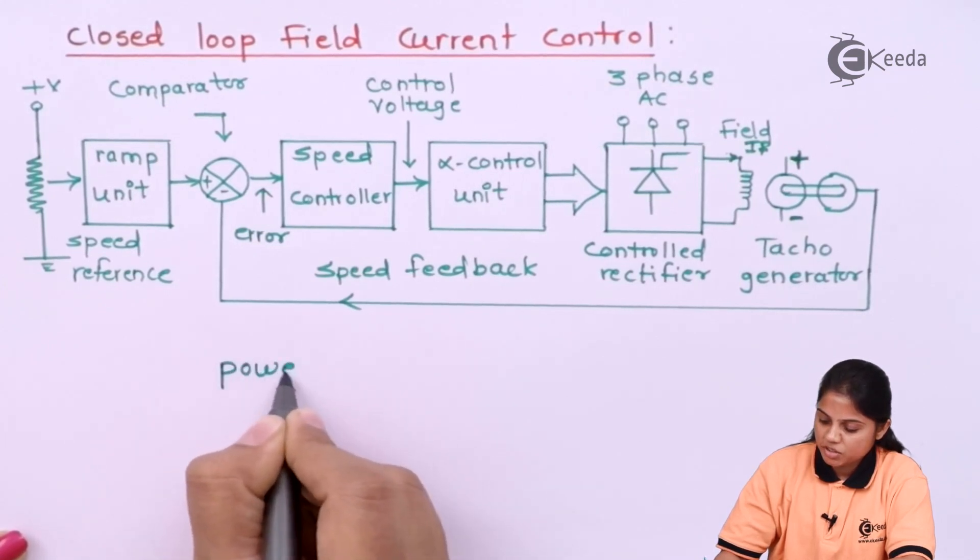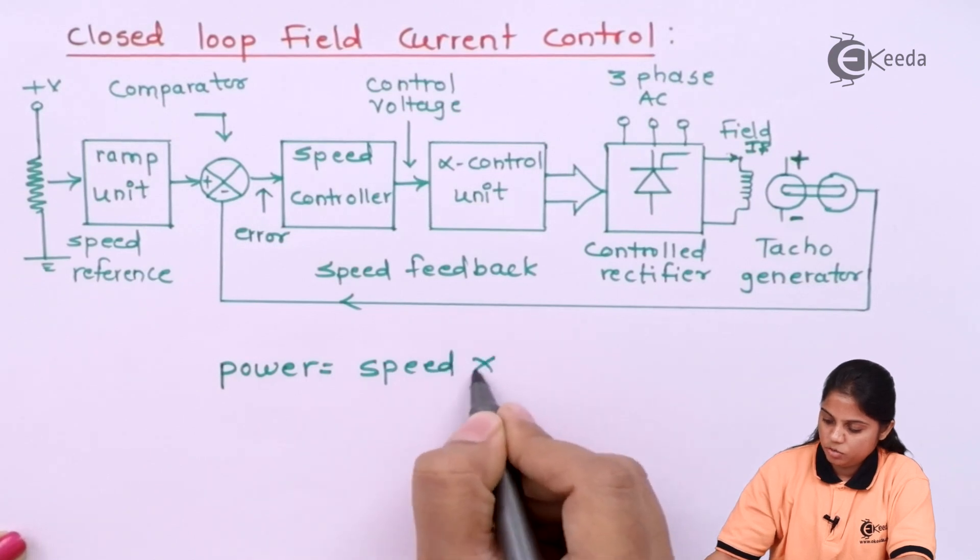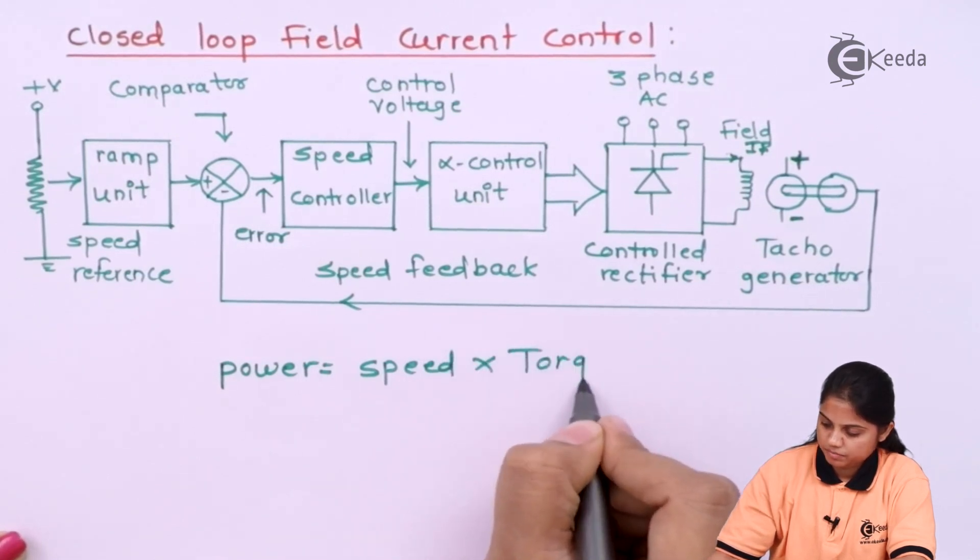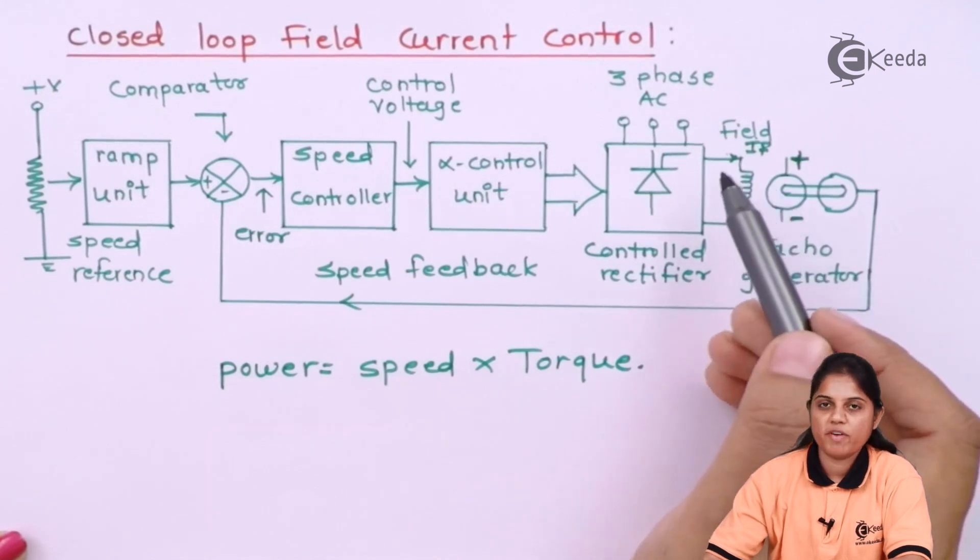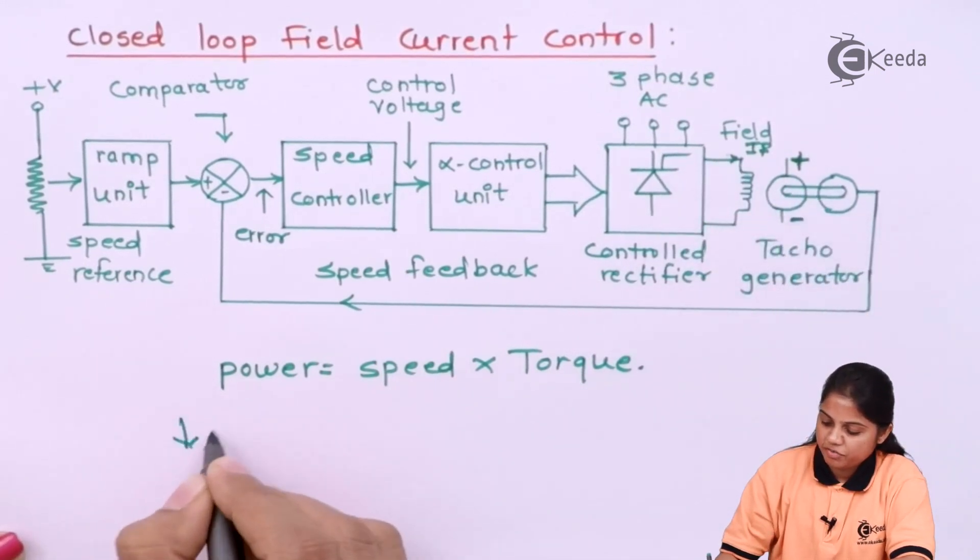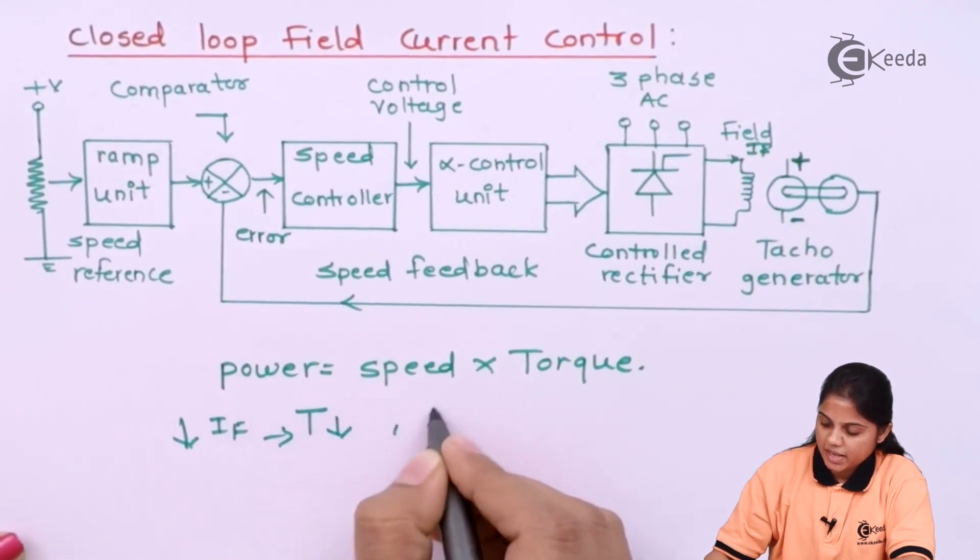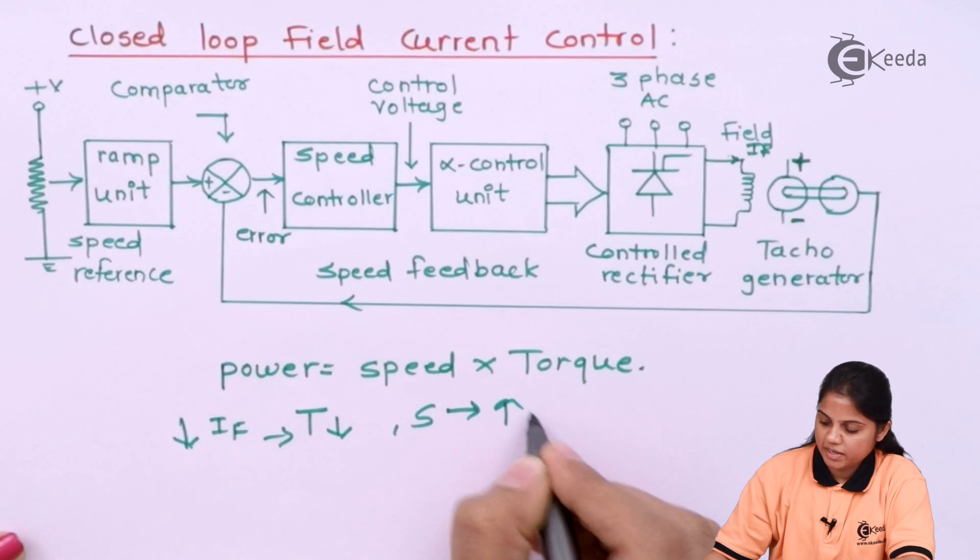Basically the power is equal to speed times torque. And in this, if you are varying field current, then if field current decreases, your torque will decrease and speed will increase.